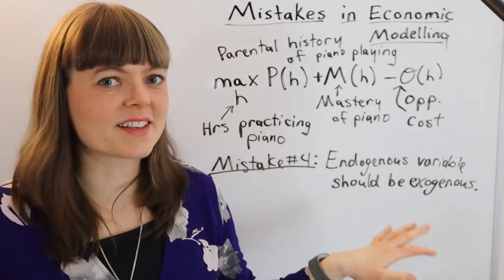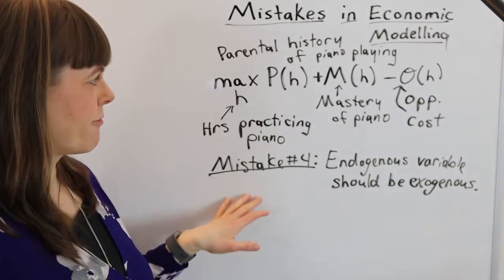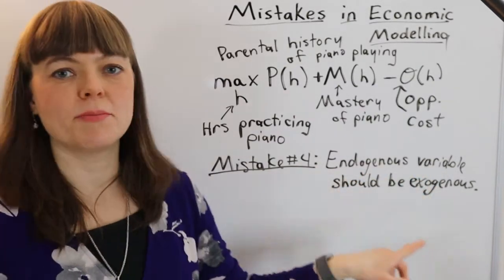I'm doing a series of common mistakes students make when they're building their own economic models. And the fourth mistake in the series is endogenous variables that should be exogenous.